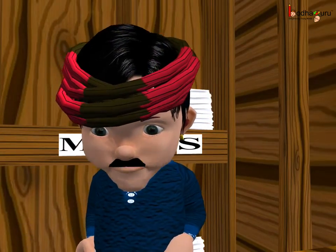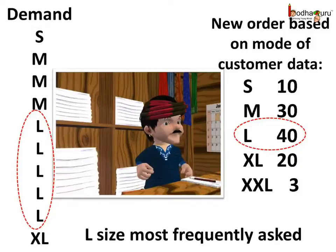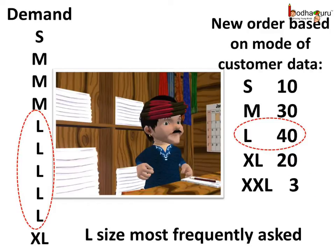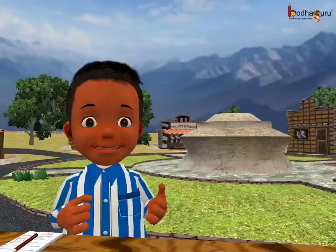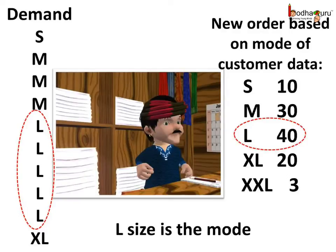Thus, the shop owner ordered 40 large — the most common in the data — as most people asked for it. Next, 30 medium, which was the second most common. Then 20 XL, then 10 small, and only 3 double XL as fewer customers asked for them. This way the seller sold more and the buyers were happy to get the desired size. The number which occurs most frequently in a given data is called the mode of that data. Hence, the size large is the mode here, as it was sold the most — 40 in number.